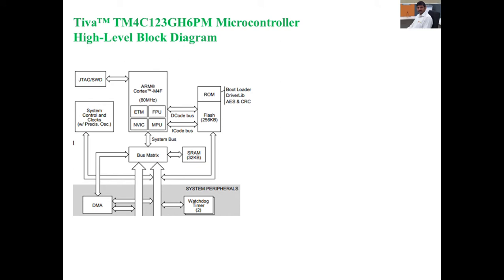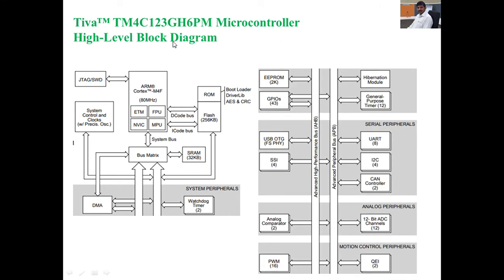Looking at the TM4C block diagram, it contains an on-chip clock signal providing 80 MHz clock frequency. It contains an on-chip embedded trace macrocell for tracing instructions and data. It contains a floating point unit to perform floating point operations, and an on-chip nested vector interrupt controller for efficiently utilizing the interrupts.